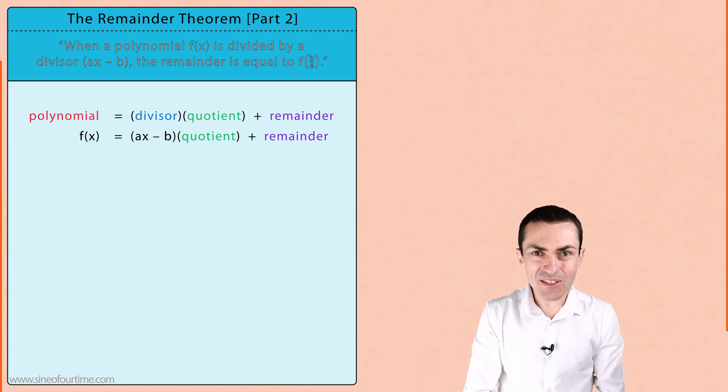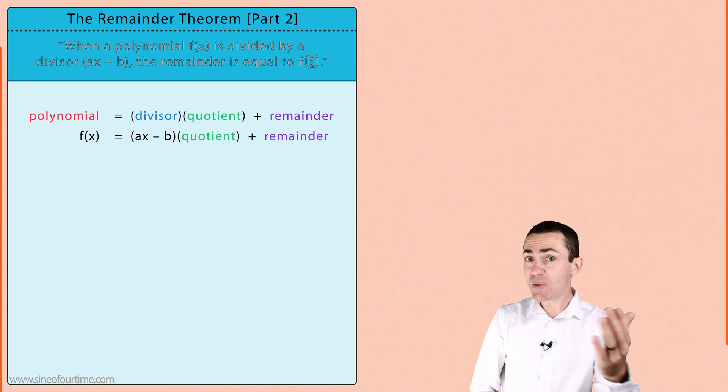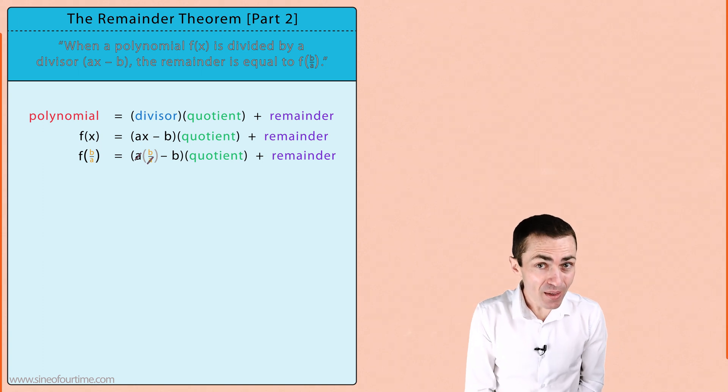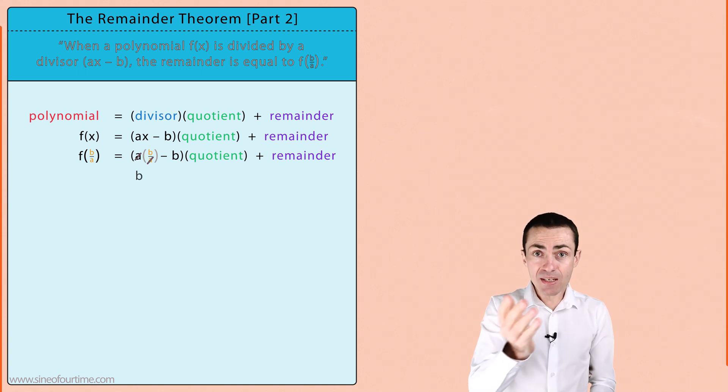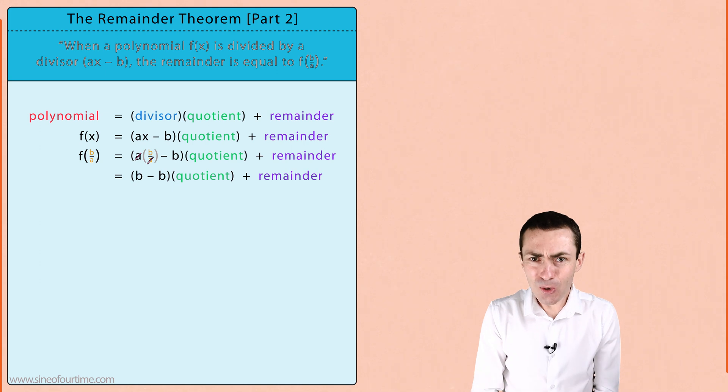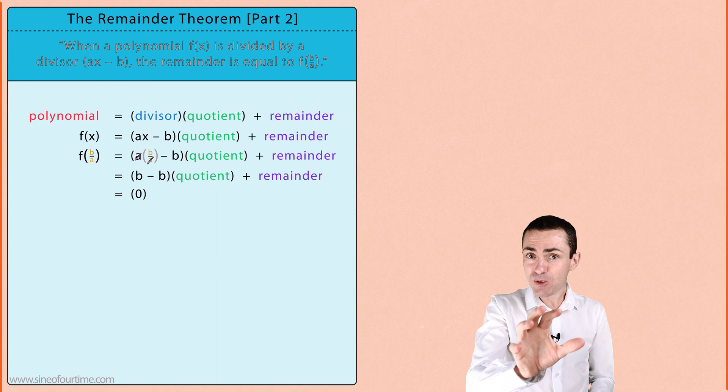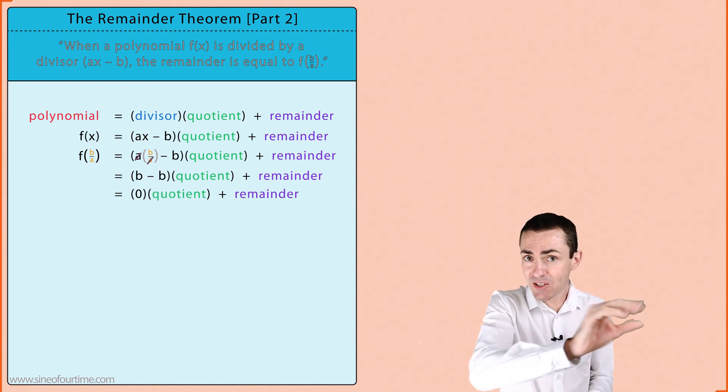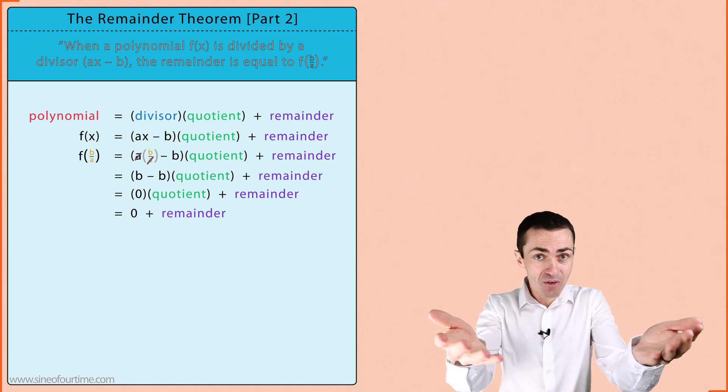Well let's explore why that's true. If we replace the x in the divisor with b over a we notice that the a's cancel and that just leaves us with b minus b which of course is equal to zero. Again this leaves us with the situation of zero multiplied by the quotient plus the remainder which gives us zero plus the remainder and ultimately the remainder.